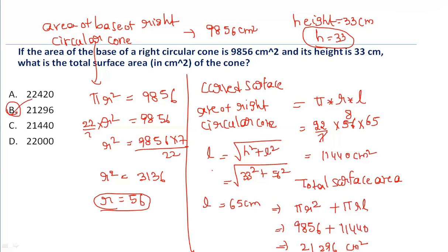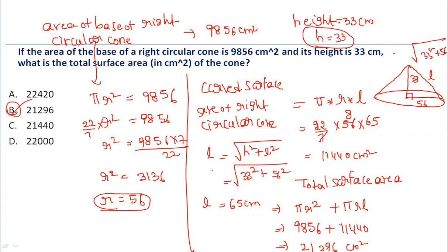21,296 — option B is the answer. The slant height l is found using l = √(h² + r²), applying the Pythagorean theorem, where r = 56 and h = 33, giving l = √(33² + 56²) = 65. The formula for total surface area is base area plus curved surface area, and the answer is option B: 21,296 cm².